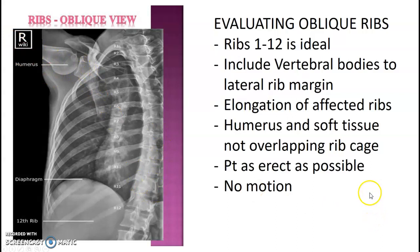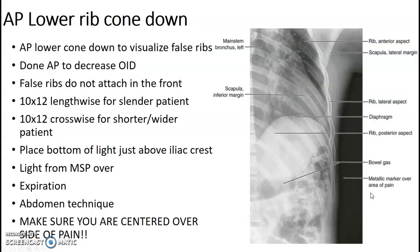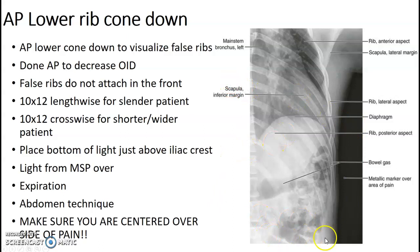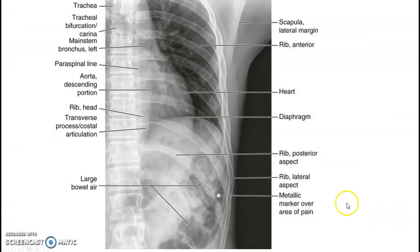The lower cone-down visualizes the false ribs. Do it AP, using a 10 by 12 lengthwise for most patients; if they're short and wide, go crosswise. The bottom of your light field goes just above the iliac crest and up as high as you can get for ribs. The BB marker — that little metal nipple marker — is placed on the site of pain.